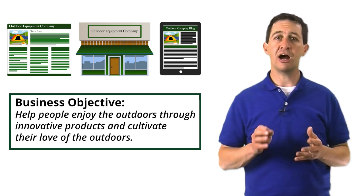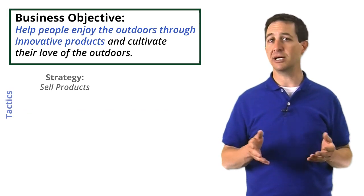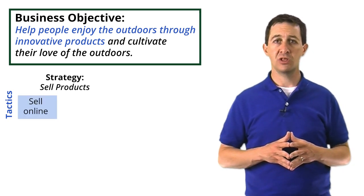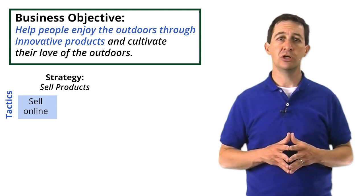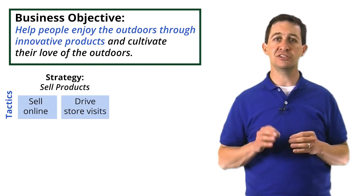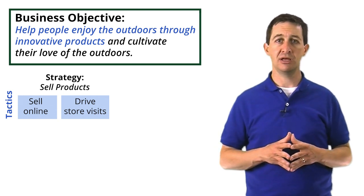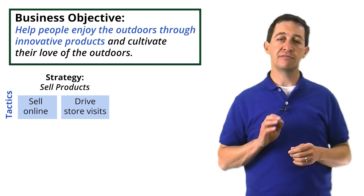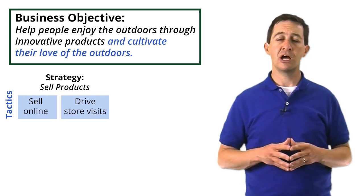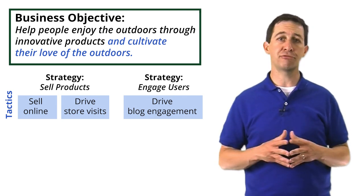To support our objective, our business will use specific strategies and tactics. One strategy would be to sell outdoor products. A tactic to support that strategy would be to sell online via the website, another would be to sell items in stores, and we could even develop a mobile shopping app. Since we also have physical stores, one way we might drive sales is by giving people information on our website or in our mobile app that helps them locate one of our stores. To support cultivating our customers' love of the outdoors, our strategy would be to engage customers in conversations about outdoor topics, and we might do that through posts on our blog.